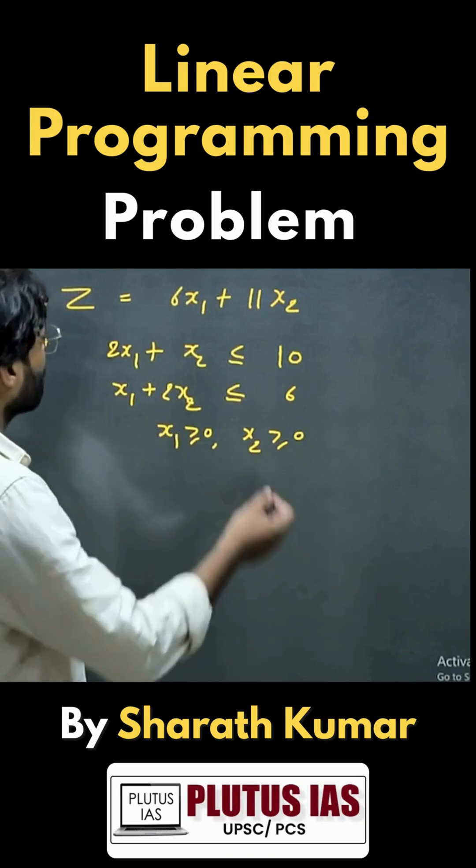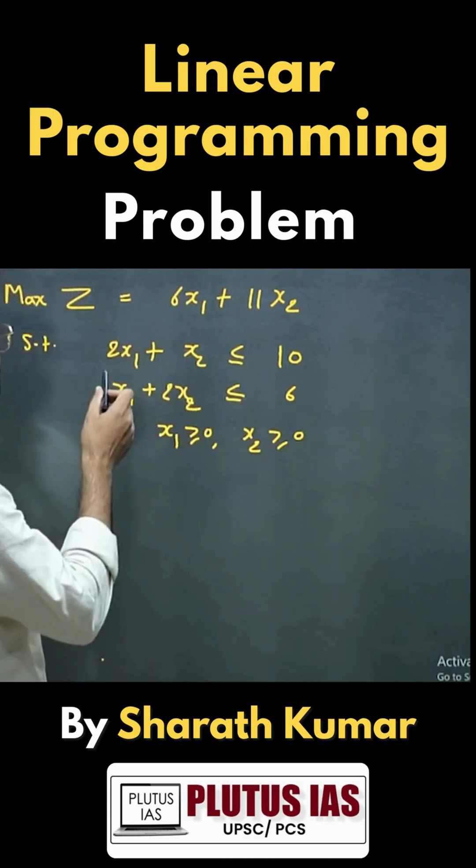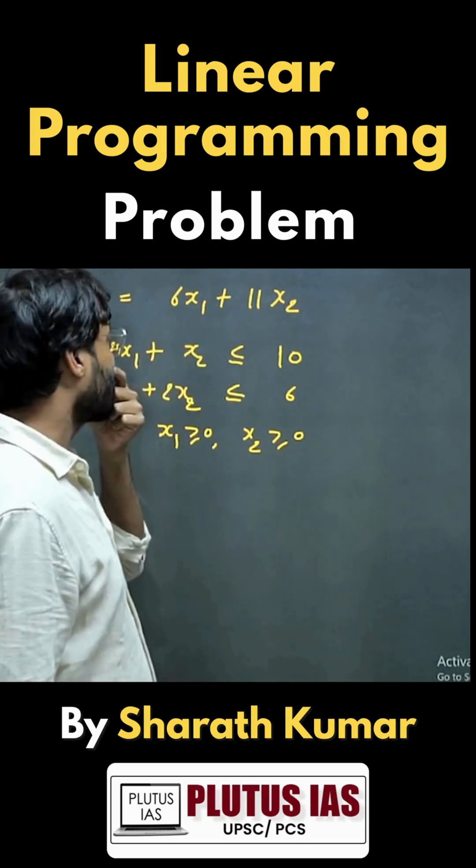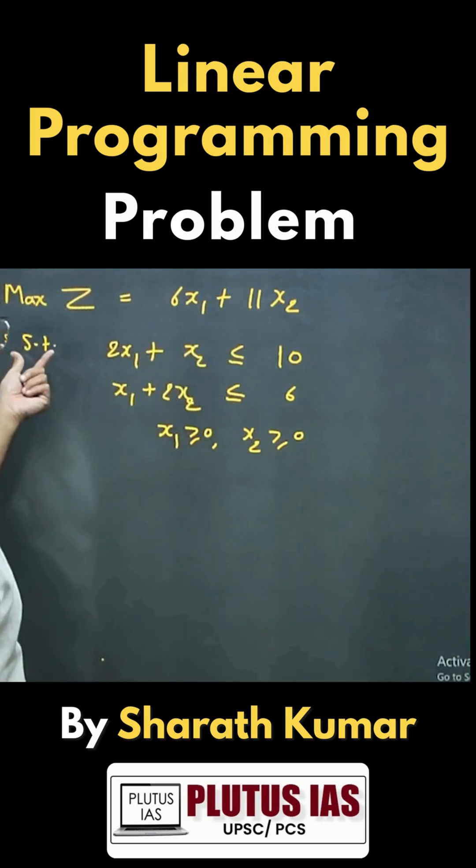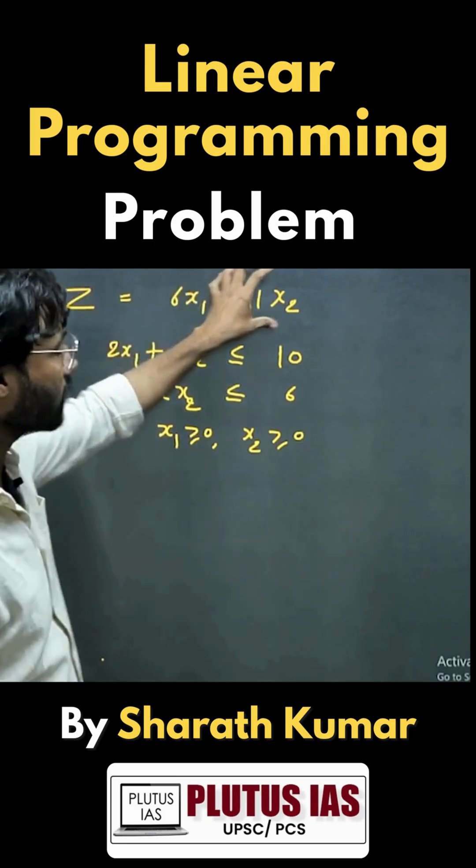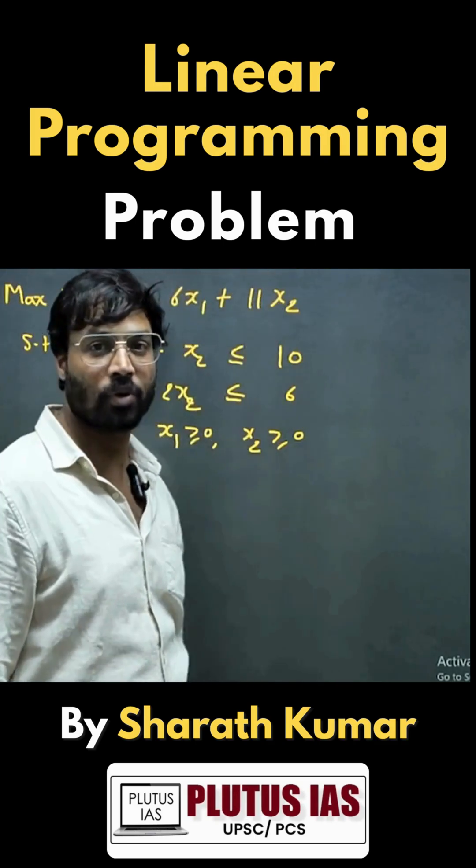I have chosen a question that is the type of maximization, meaning the objective function is max z equal to 6x1 plus 11x2, subject to these constraints. These are called the constraints and this is called the objective function in LPP, that means linear programming problem.